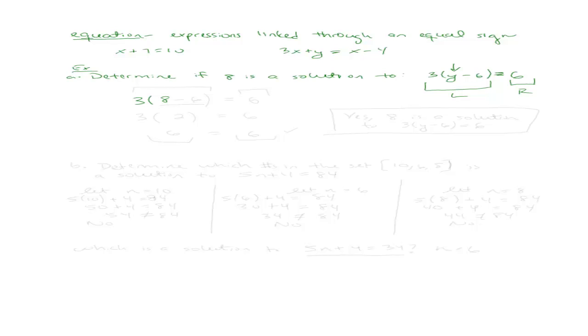So I'm going to plug in 8 for y, and then see if my left side equals my right side. So the left I can do one of two ways. I can do with the distributive property, or I can do with the order of operations. So let's go ahead and do it with the order of operations. I'm going to do 8 minus 6 first, and I get 3 times 8 minus 6, which is 2, and 3 times 2 is 6. So here, it actually did turn out that my left and my right side were the same. So my answer is going to be yes. 8 is a solution to the equation 3 times y minus 6 equals 6. So that's my answer right there.